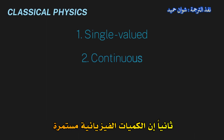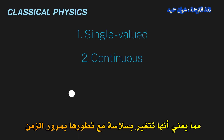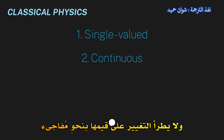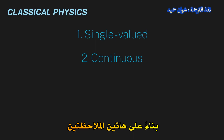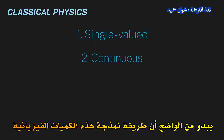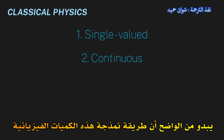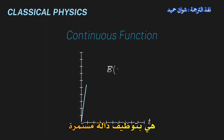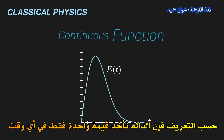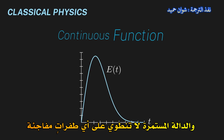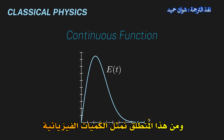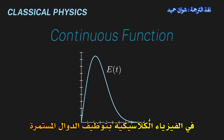Second, physical quantities are continuous, meaning they vary smoothly as they evolve in time and they don't change values suddenly. Given these two observations, it hopefully seems clear that the way to model these physical quantities is with a continuous function. A function, by definition, only takes on one value at any single time, and a continuous function doesn't have any sudden jumps. So this is why in classical physics we represent physical quantities with continuous functions.